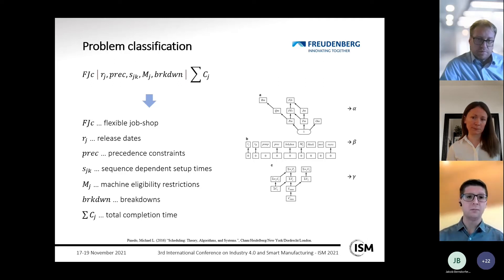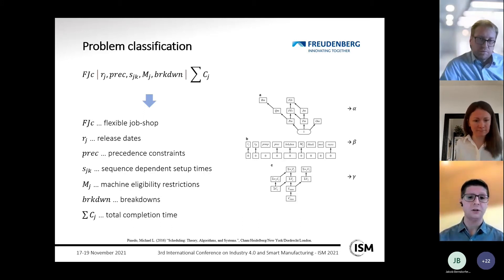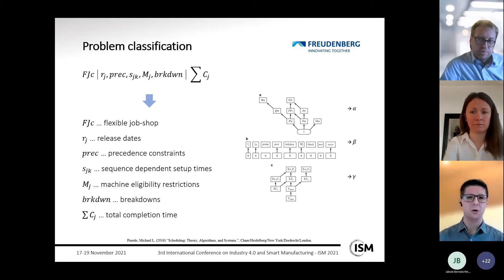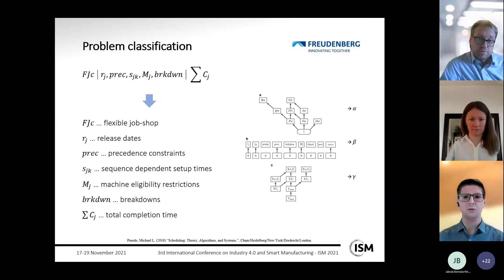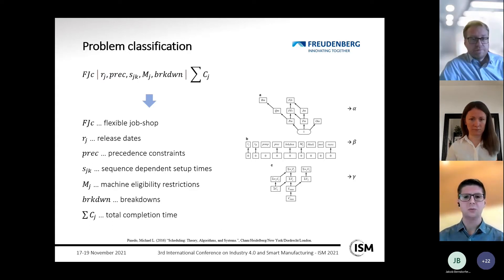Based on the problem definition and classification, a formal integer programming model was developed. However, this model showed very poor performance — it was very hard to find optimum solutions — which led to the development of the constraint programming solution approach, which we will go into detail on the next slide.